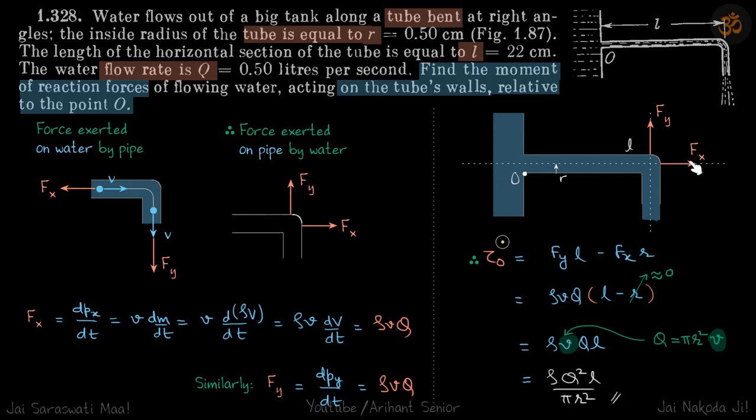Now if we can find the values of Fx and Fy, we can find the torque of these forces about point O. So let's find what are Fx and Fy. Because we can clearly see there is a change in momentum here, let's write that Fx equals dPx by dt.